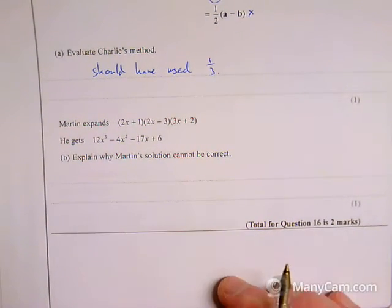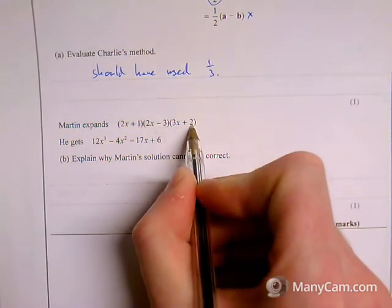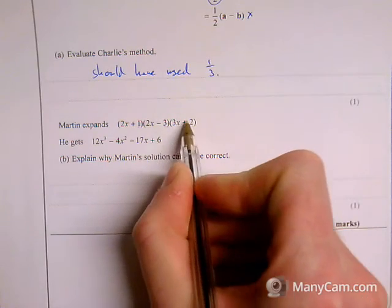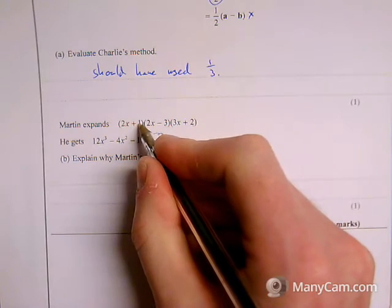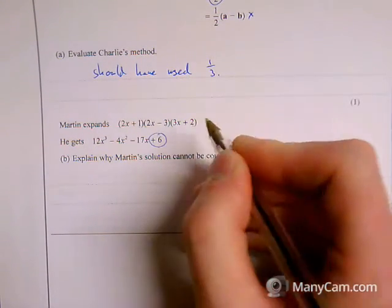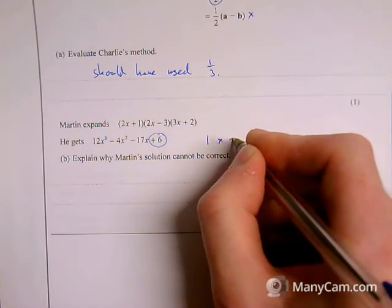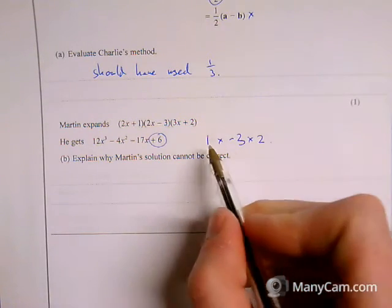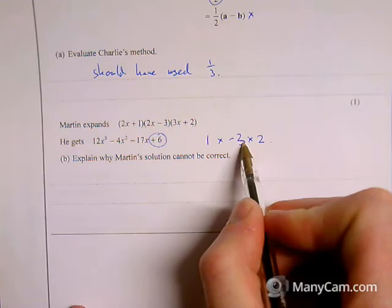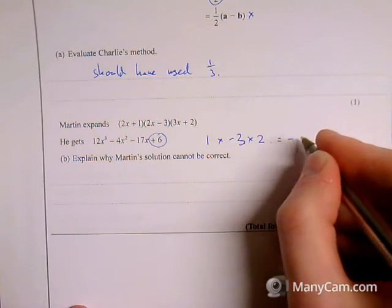Or, making it easier for yourself, if we just look at the constants at the end. When we multiply those together, we're going to end up getting whatever's on the end there. If I look at the ones here, we've got 1, minus 3, and 2. So I need to do 1 times minus 3 times 2. 1 times minus 3 is minus 3, times 2 gives you minus 6.